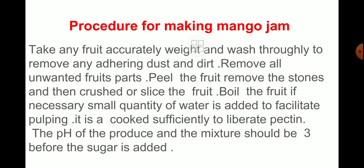Now the procedure we have to learn today is for making mango jam. Take any fruit accurately, wet and wash thoroughly to remove dust and dirt. Remove all unwanted fruit parts, peel the fruit, remove the stones, and then crush or slice the fruit. Boil the fruit — if necessary, a small amount of water is to be added to facilitate pulping. It is cooked sufficiently to liberate pectin, and the pH of the mixture should be three before the sugar is added.